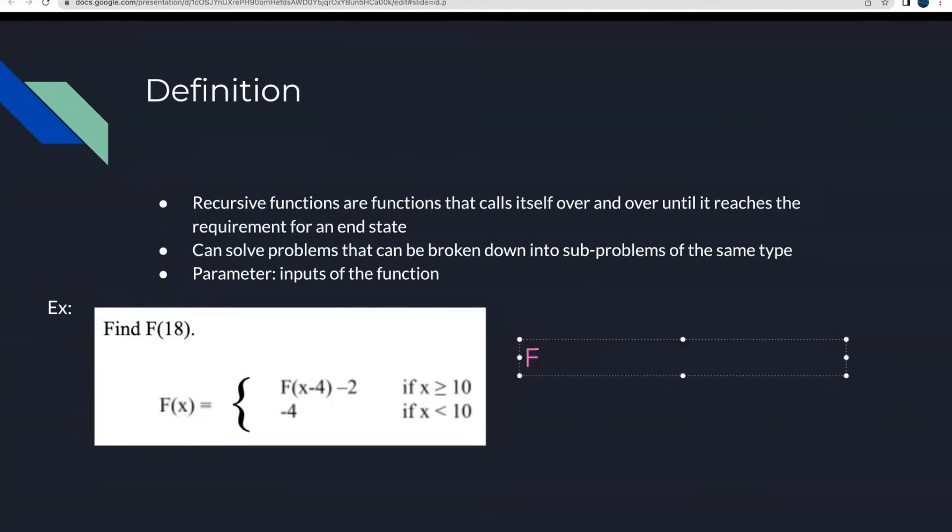So what we're going to do is we're going to first write this out, F of 18 is equal to, and then we're going to check here. So we have two if statements. First, we check if x is greater than or equal to 10. And it seems that this is true. So we're going to call itself, call function F of x minus 4. So x is 18, so 18 minus 4 is 14, and then minus 2. So don't forget this is very important.